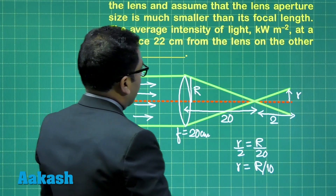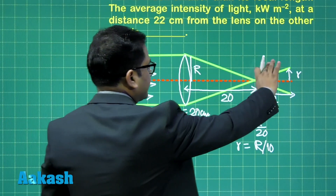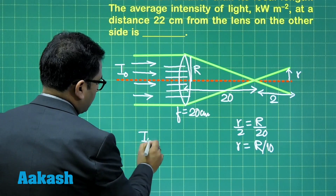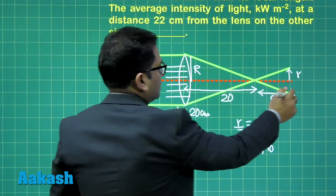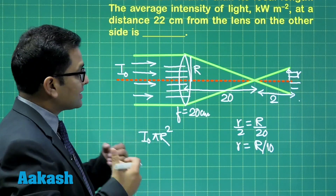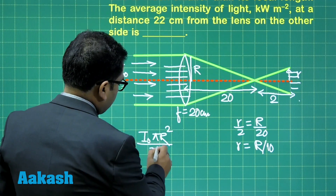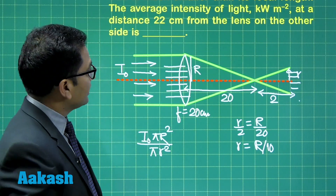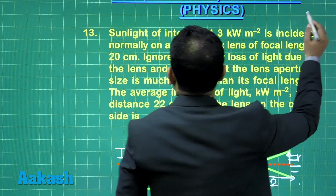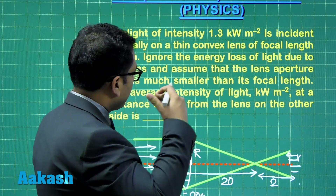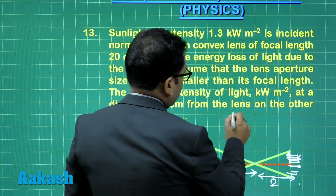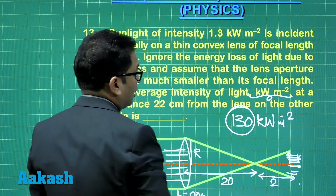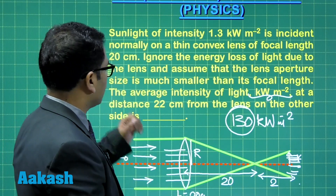The idea is quite simple. The power entering the lens is I naught multiplied by pi R square. The whole energy appears on the other side but at a lesser cross-sectional area, pi r square. Since R square by r square gives a factor of 100, and the incident intensity was 1.3 kilowatt per meter square, the transmitted intensity at that point would be 130 kilowatt per meter square. Therefore, 130 is the correct answer for question number 13.